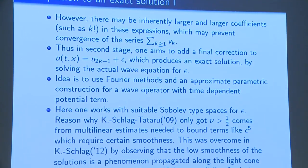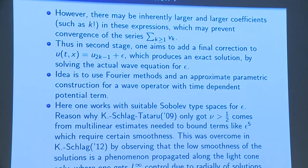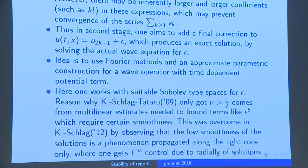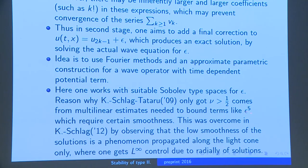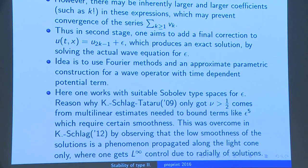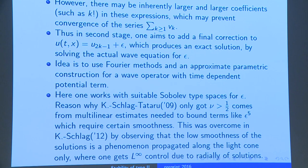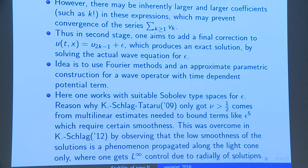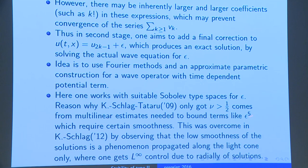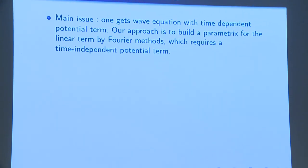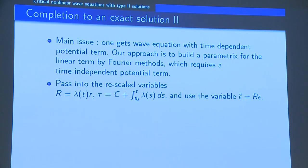Why was the original work by Tataru, Schlag and myself only for ν bigger than 1/2? There is a very technical reason: you need to control the ε^5 terms, and if you don't have quite enough regularity — only H^1 — then we had some issues controlling these terms.